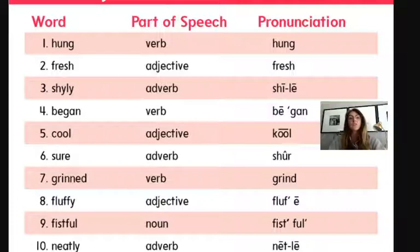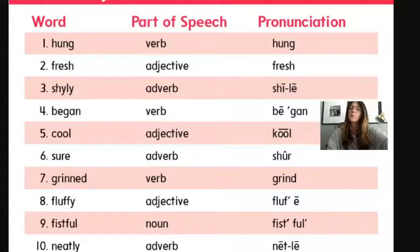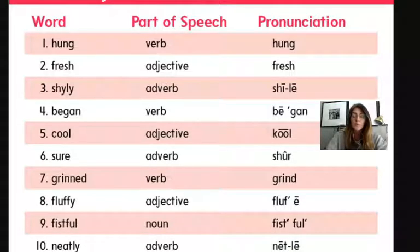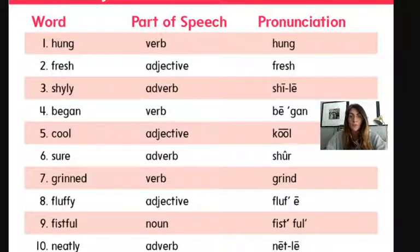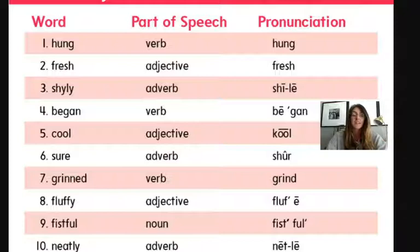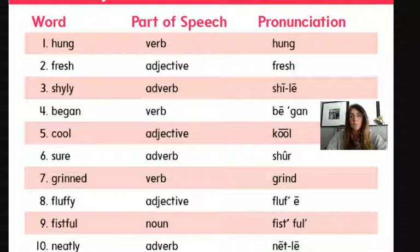Number five is cool. Cool is an adjective, and adjectives describe. Cool can mean something is awesome, or it can describe temperature — not warm. For example: a cool breeze blew through the trees.